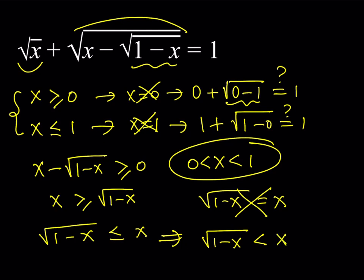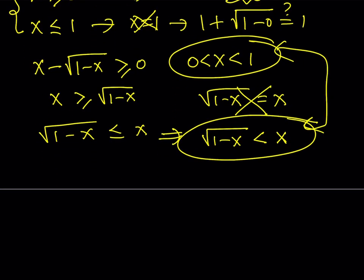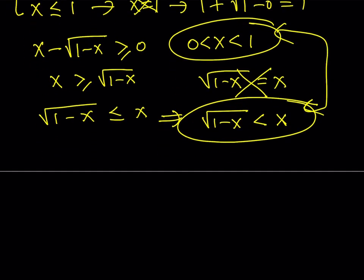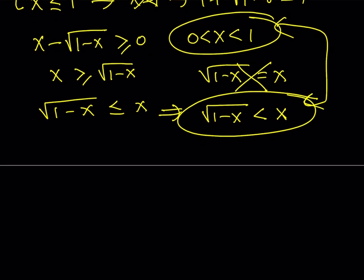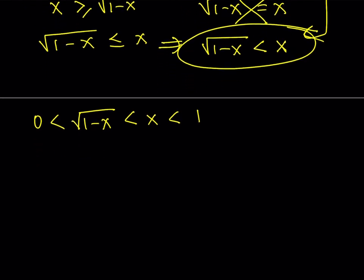If we put this all together, we can write a chain of inequalities. We start with 0, and 0 is less than the square root of 1 minus x — because the radical expression is always greater than or equal to 0, but it can't equal 0 since x cannot equal 1. We also know that this is less than x, and x is less than 1. So we can write the following chain: 0 < √(1−x) < x < 1. Now let's write down our original equation one more time and pair it up with something nice for our first solution method.